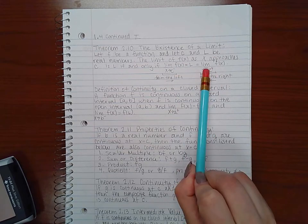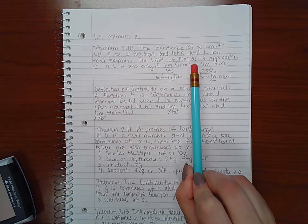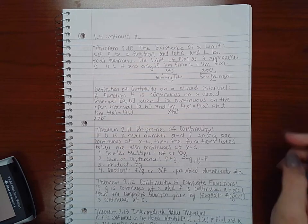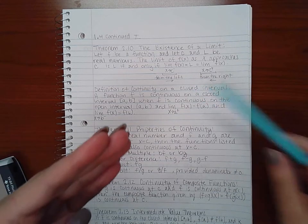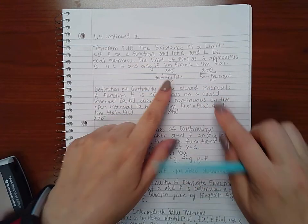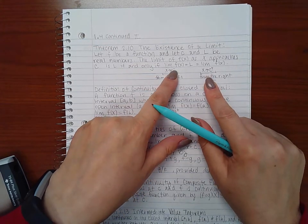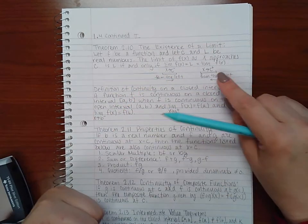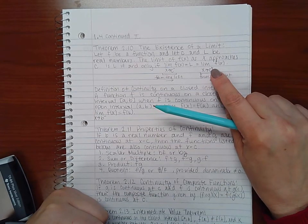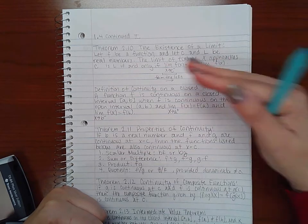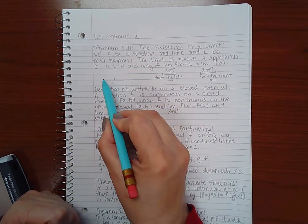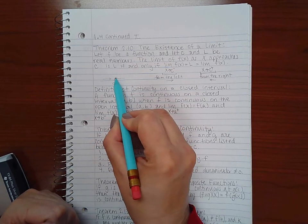If both of those are the same and they equal l, then the limit, the complete limit of f is equal to l. So, we've always looked at the left side and the right side. It's just now we have notations for that. So, if you have a little minus superscript, it means from the left side of c. If you have a little plus sign superscript, then it means from the right side of c. So, if you're looking at a number line here, c, this would be from the left, this would be from the right.